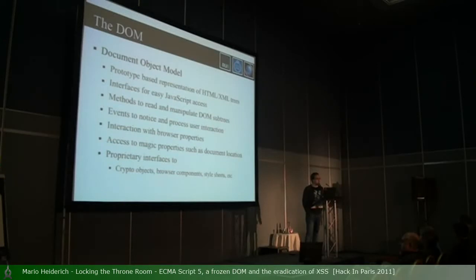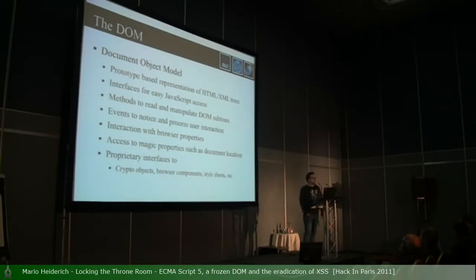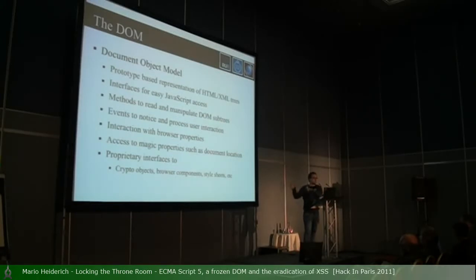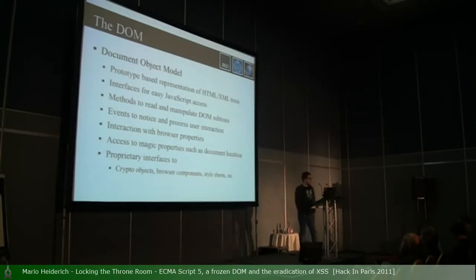You can do a simple string assignment on the location property and it completely changes everything — you'll be led to a different site. If you then say location equals javascript:alert(1), you have an XSS because you execute JavaScript just by assigning a string to location. This is why one of my favorite XSS vectors is possible: location equals name — which doesn't contain any parentheses but still executes arbitrary code. Name can be set from a different domain in the same tab because it's from the old ages of frames. This vector likely bypasses most filter systems.